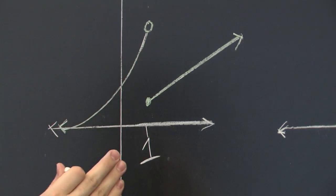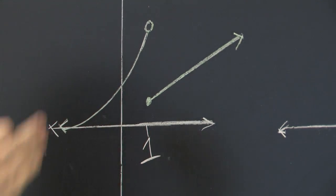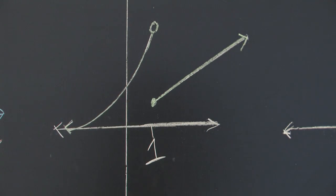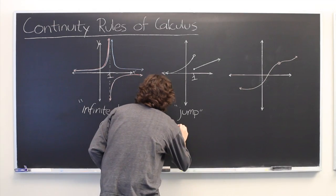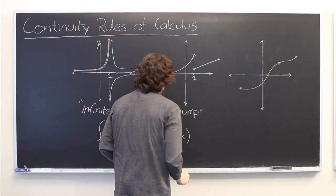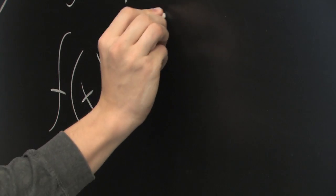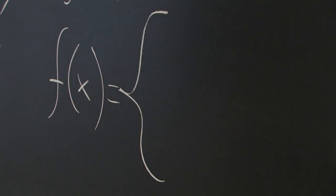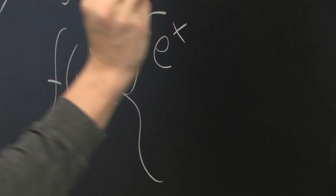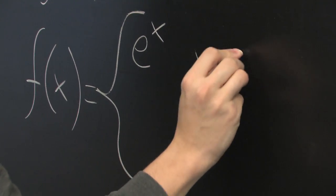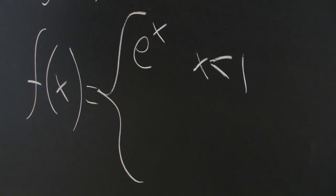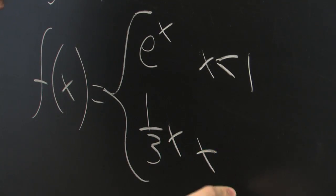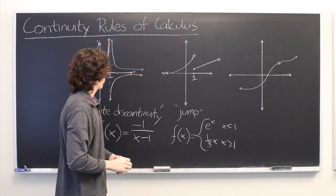From negative infinity up until 1, non-inclusive, we're using our exponential function. And from 1, inclusive, to positive infinity, we're using our linear definition. Now this is typically indicated with this sort of notation. The bracket to indicate that our function is piecewise. So it might be something like e to the x for x less than 1, and then we'll say something like one third x for x greater than or equal to 1.